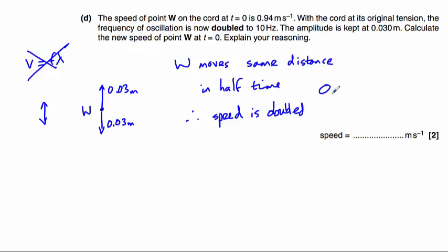So 0.94 multiplied by 2 equals 1.88 metres per second.